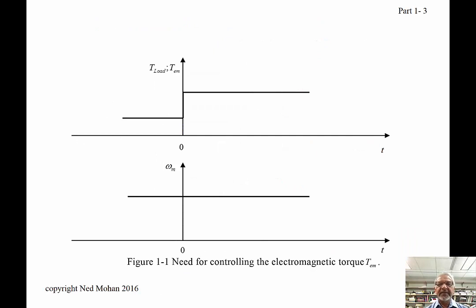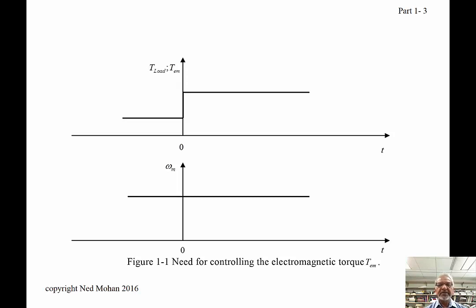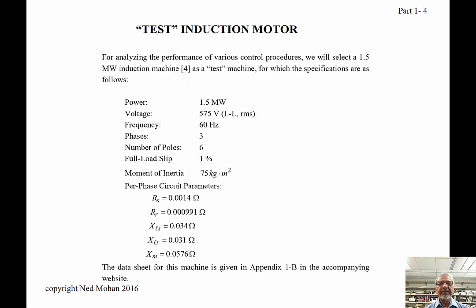What we are trying to describe here is how to control the electromagnetic torque developed by these machines, whether as a motor or a generator. Imagine that the load torque takes a step jump — if the objective is to keep the speed constant, then the electromagnetic torque should also take a jump. So how can we minimize the perturbation in speed as much as possible? This involves a test induction machine which is described in this chapter and used throughout the book.